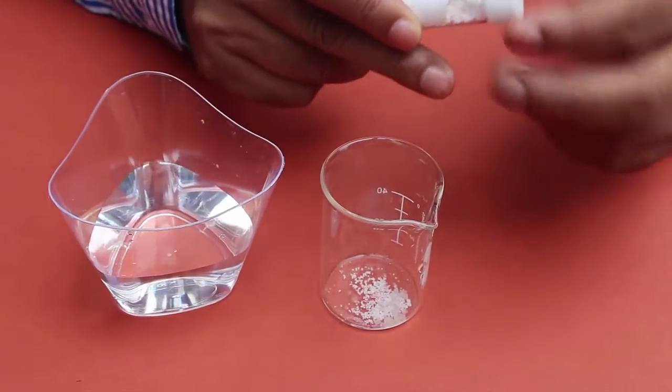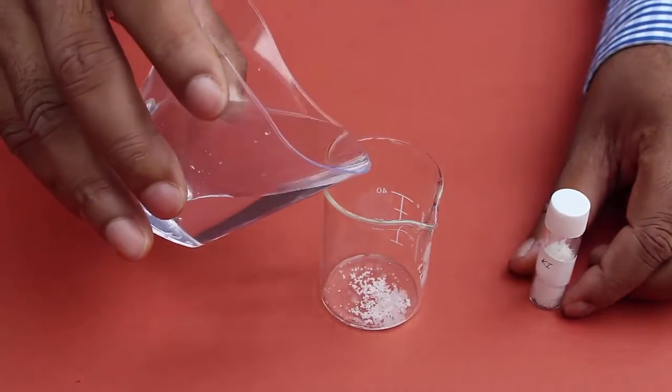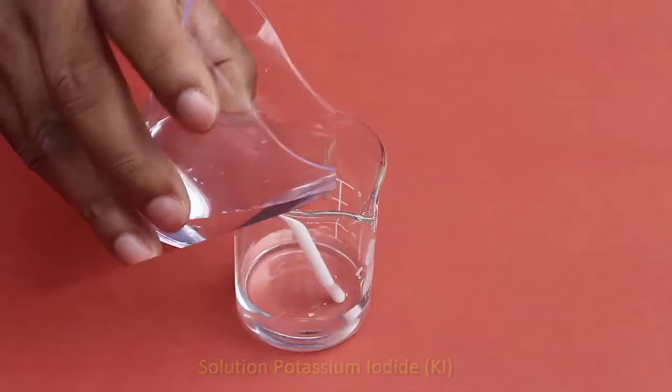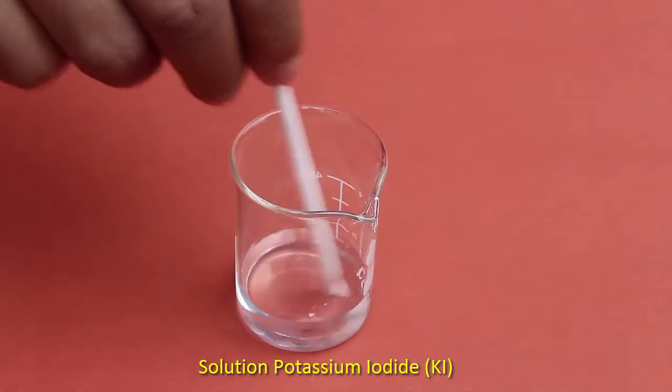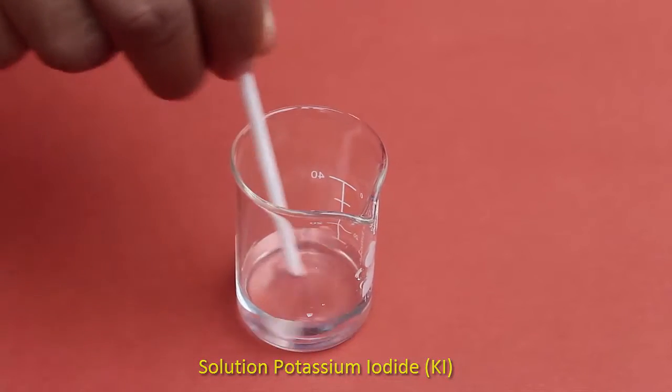After taking the potassium iodide into the empty beaker, now pour water to make a saturated solution of potassium iodide. To prepare a clean solution, we have to stir the solution with a stirrer. Now this solution is ready.